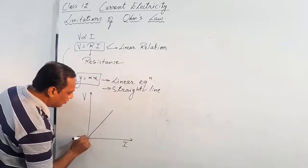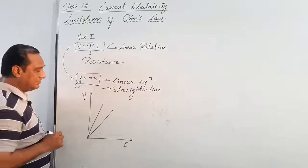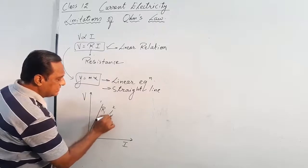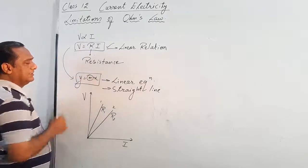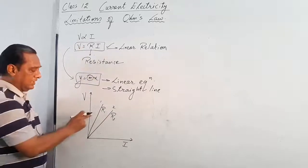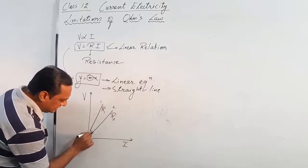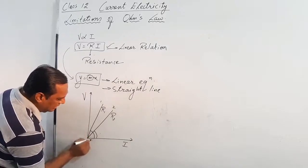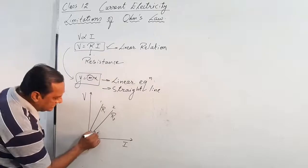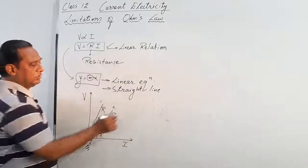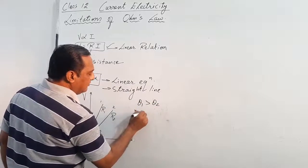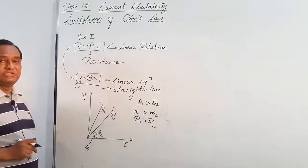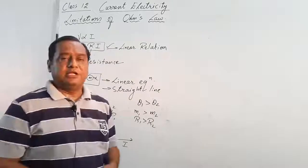If I draw the Ohm's law graph for two different conductors, I get two lines. The first conductor has resistance R1 and the second has resistance R2. R is compared with the slope m of the line. The slope of the first line is greater than the slope of the second line — theta1 is greater than theta2 — so R1 is greater than R2.